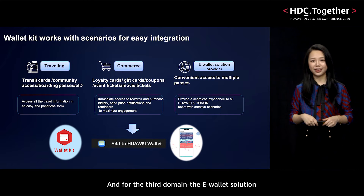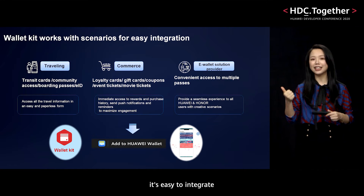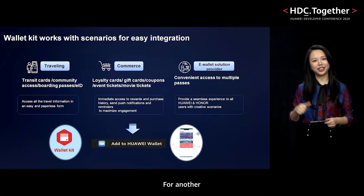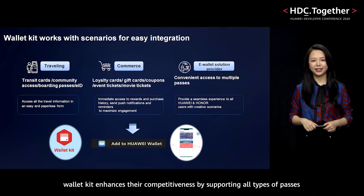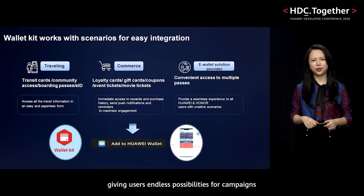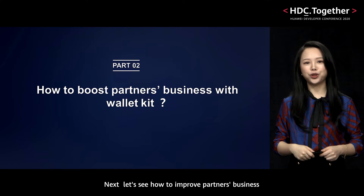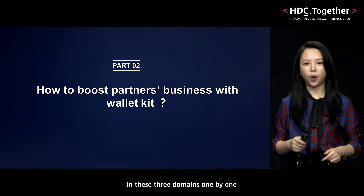For the third domain, the E1 solution, there are two advantages for B2B partners. For one thing, it's easy to integrate, minimizing development work and accelerating the service rollout timeline. For another, WalletKit enhances their competitiveness by supporting all types of passes, giving users endless possibilities for campaigns. Next, let's see how to improve partners' business in these three domains one by one.